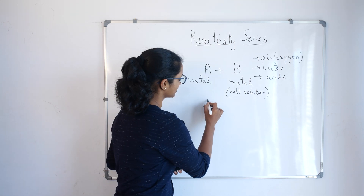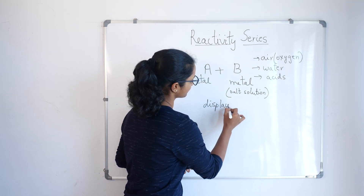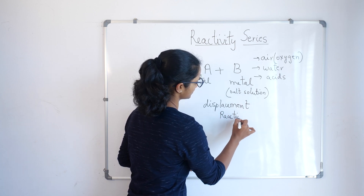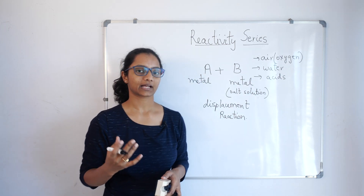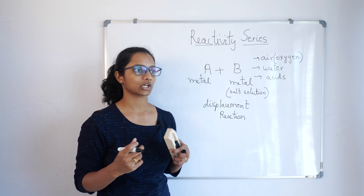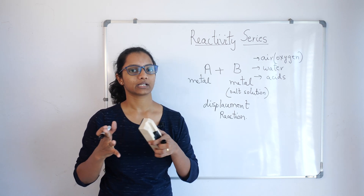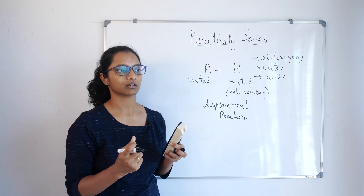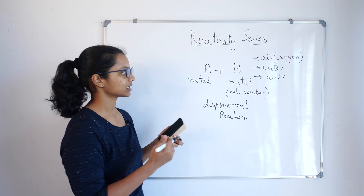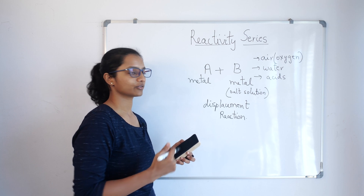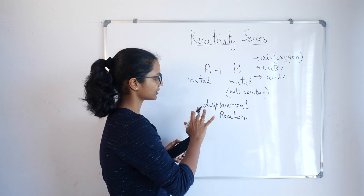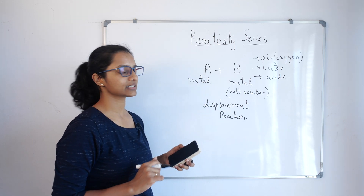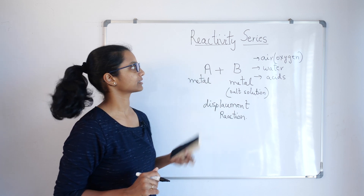To understand the reactivity series — to get a thorough understanding of which metal is strong, which is weaker, which reacts quickly and vigorously, and which reacts slowly — we need a decreasing order of their reactivity. This is determined through the displacement reaction, and that is how the reactivity series is obtained.